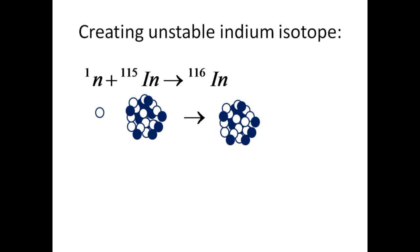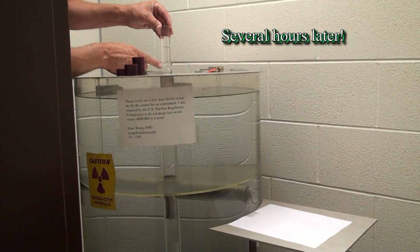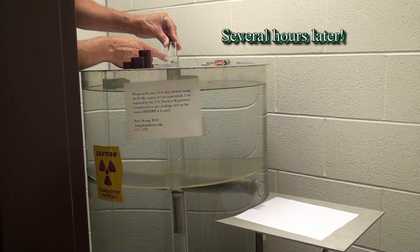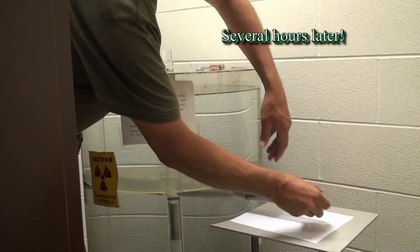Placing the non-radioactive indium, mass number 115, next to the neutron source, we can embed a neutron to transform it into the unstable isotope indium-116. We now reverse the procedure to remove the radioactive sample of indium-116.